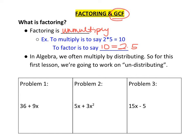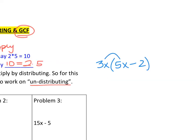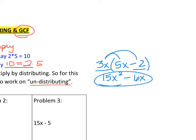Another way to think about factoring is to think about it as undistributing. Remember in algebra, we distribute when we multiply. For instance, the distributive property would give me 15x squared minus 6x as a final answer. Today, they're going to give me that answer and say, what was this problem in the beginning?